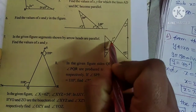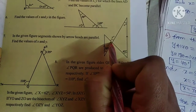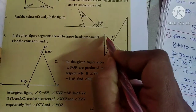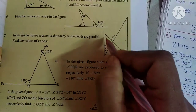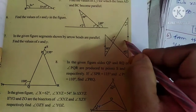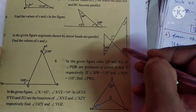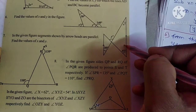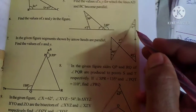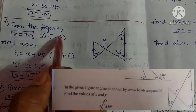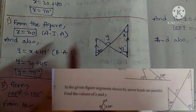Now find the y angle. Using alternate interior angles for the relevant angle, and then applying the exterior angle property on the triangle — the exterior angle equals the sum of two interior opposite angles. So y equals x plus 45. Since x equals 30, y equals 30 plus 45, which is 75 degrees. From the figure: x equals 30 degrees by alternate interior angles, and y equals 75 degrees by the exterior angle property.